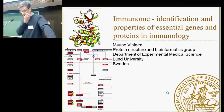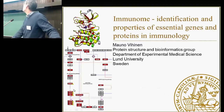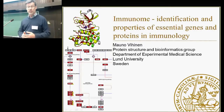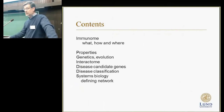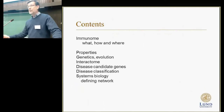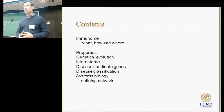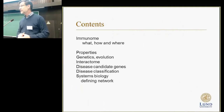There are two figures here. I'm going to talk about this part today, and recently I've been talking more about variations in the immune system, but the concentration today is about immunome. I will start by describing what is immunome, how, and where, discuss properties of the immunome, look at the genetics and evolution of the immune system, then interactions within the immunome proteins, discuss how to identify novel candidate genes, classify immunodeficiencies, and finally about systems biology. I'll try to cover lots of things related to immunomics today.